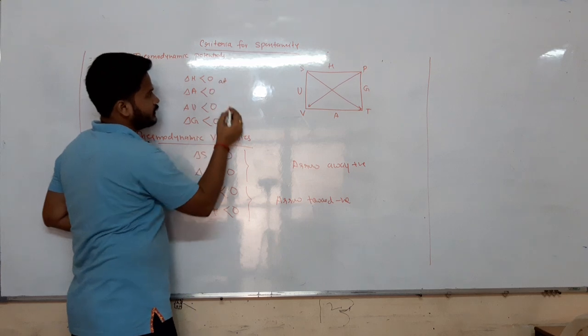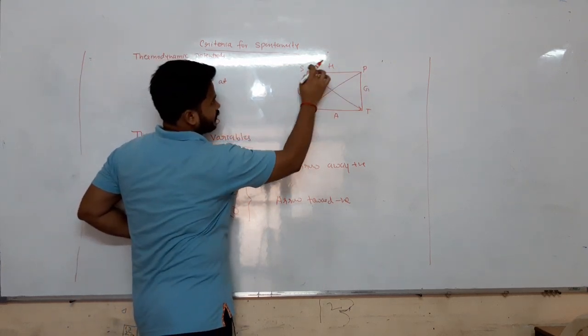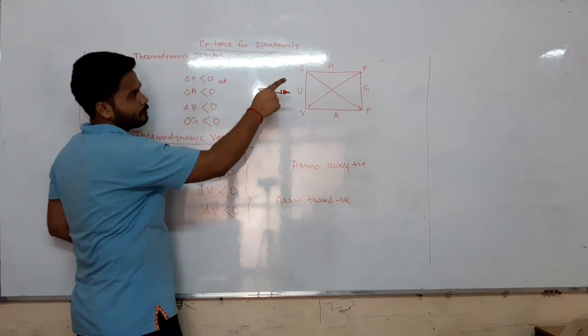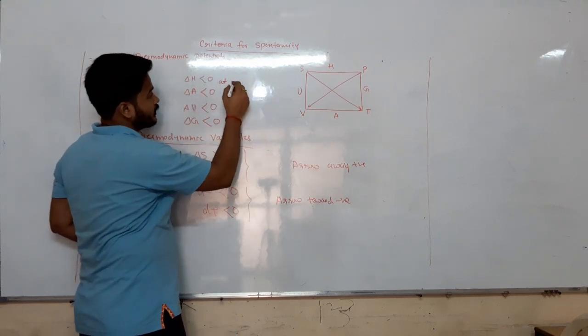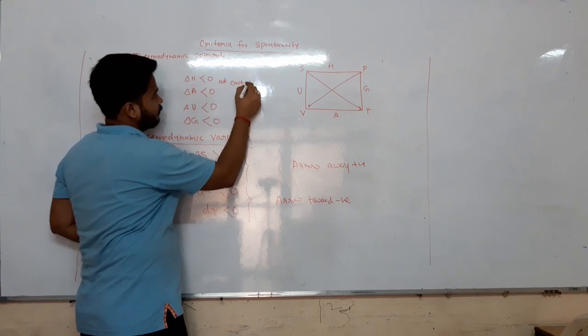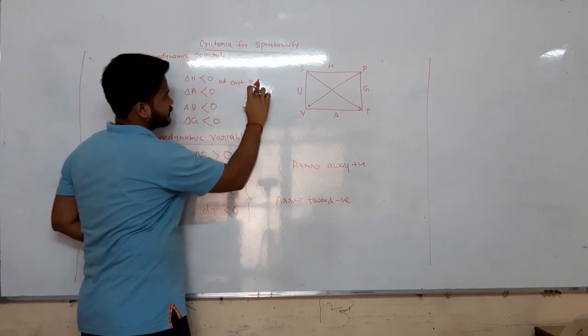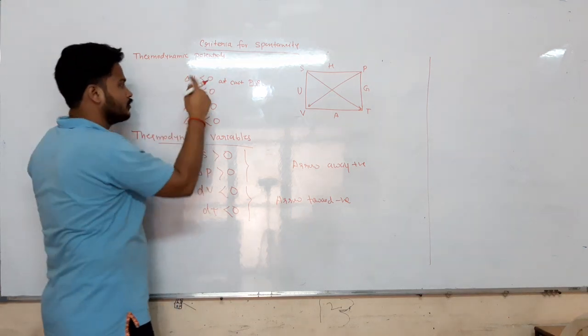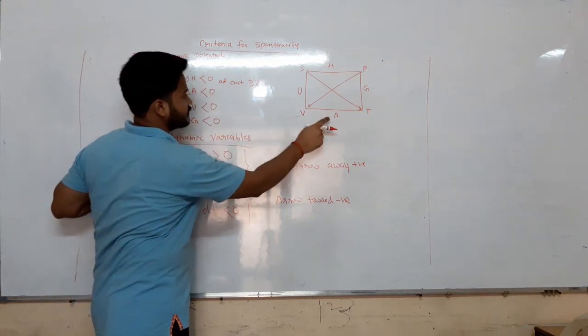At delta X here, what we are doing is determining spontaneity. For a spontaneous process, the value should be less than 0. This is more than 0 for a non-spontaneous system.